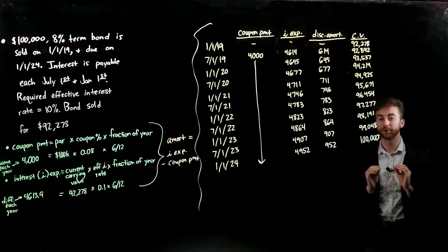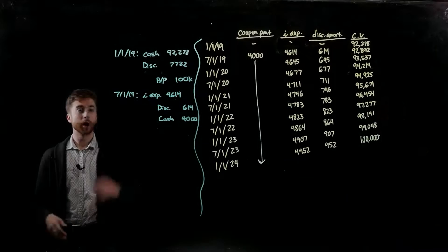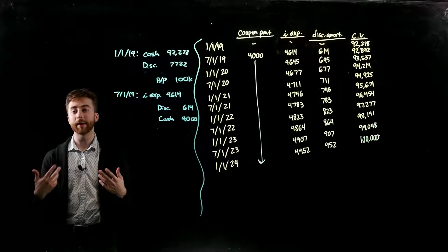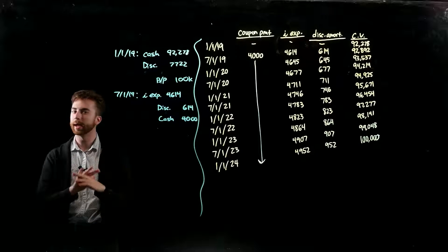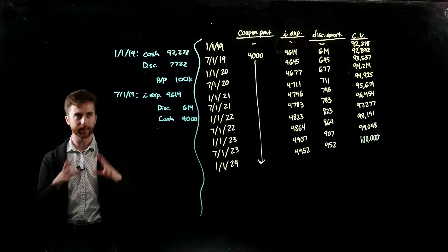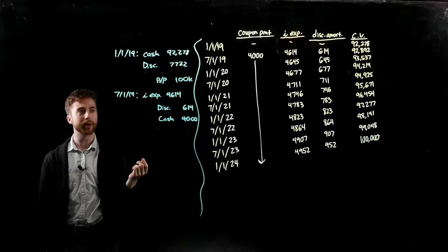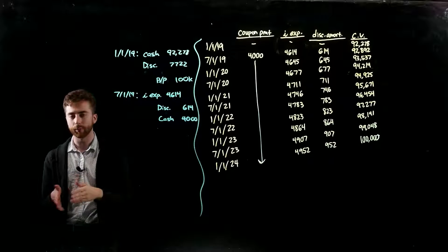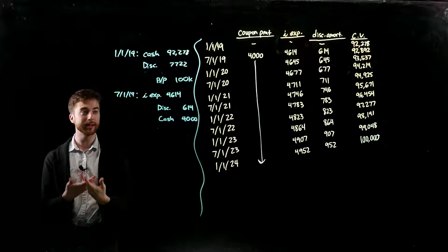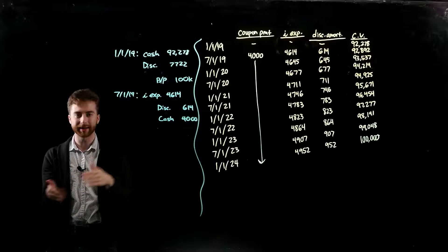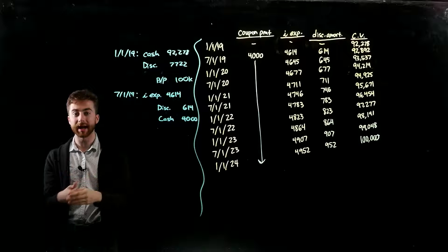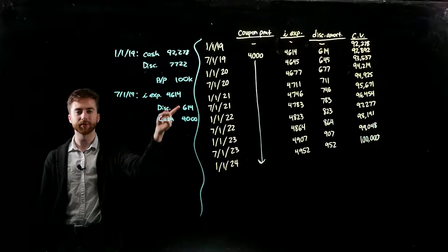Before wrapping up, let's look at the journal entries for two of the main transactions in this amortization schedule. We're speaking from the perspective of the company selling the bond — so these are our own books, our own interest expense, our amortizing discount. On 1-1-19, we sold the bond for $92,278. We debit cash for $92,278 since that's what we received. The difference between the cash received and the par value — $100,000 minus $92,278 = $7,722 — is the amount of the discount.